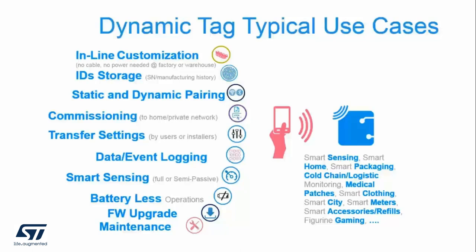NFC dynamic tag can also be used to commission new hardware such as LED lights or security cameras onto a mesh network. We can use power in full passive mode to power smart sensing applications such as the NFC sensor tag. And of course, you can also perform firmware upgrades in some applications where the firmware data is rather small — the power configuration is small enough that you can actually power the entire tag with its associated microcontroller and update the firmware.